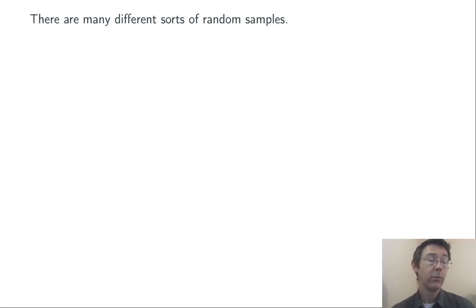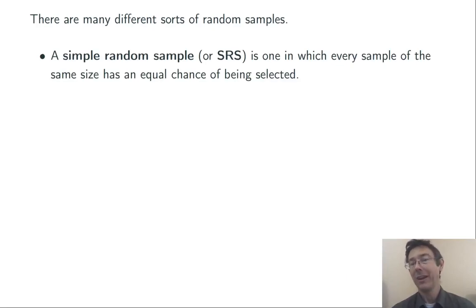There are many sorts of different random samples. Let's talk about a few of them. A simple random sample, or SRS, is the most intuitive. It's one in which every sample of the same size has an equal chance of being selected.